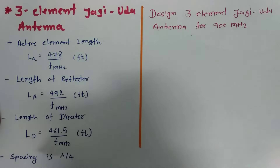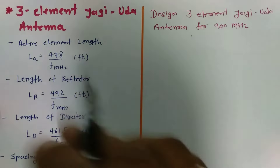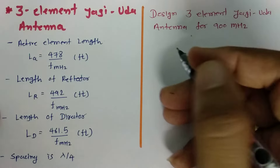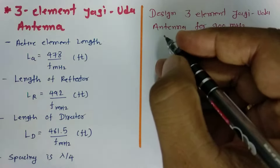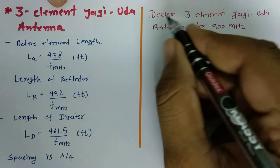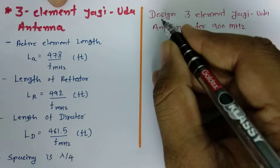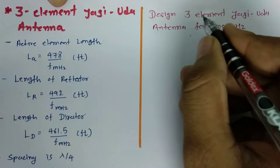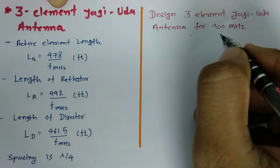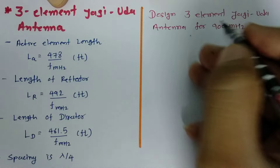One should take spacing between elements as lambda by 4. That is how we can design a three element Yagi-Uda Antenna. For the example, we are going to design a three element Yagi-Uda Antenna for 900 MHz frequency.